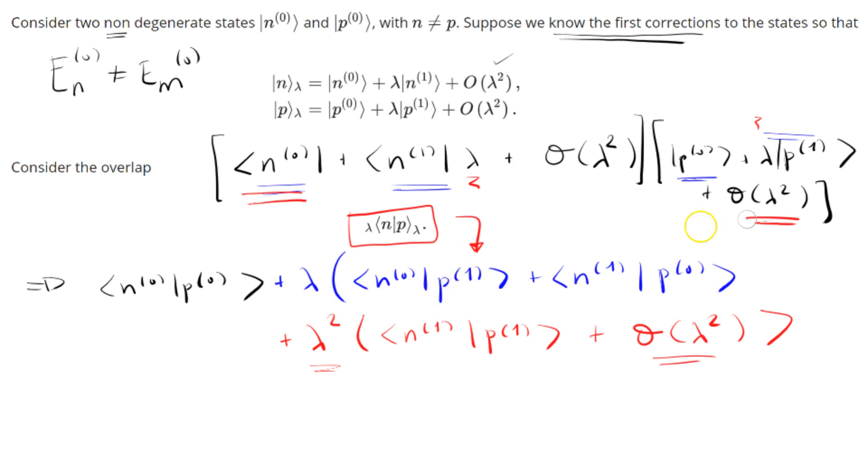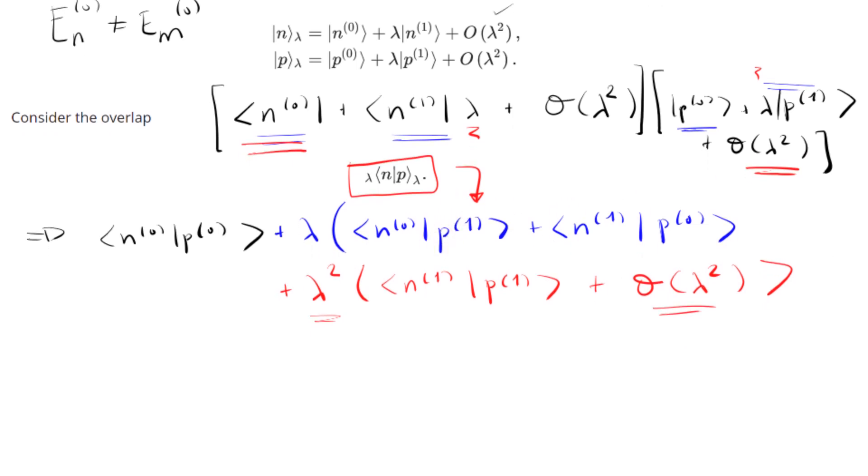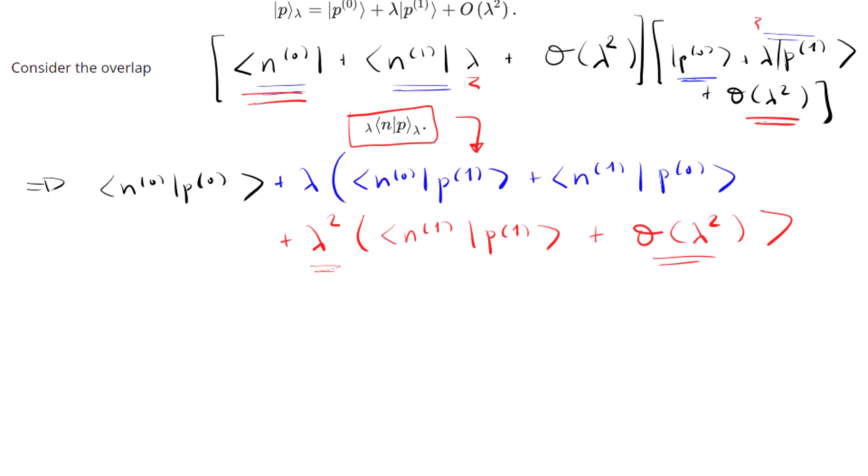But regardless, let's try to calculate this. So, let's see. We get a new color here. So anyways, we know, let's look at this guy first. N0, P0. You guys should know what this is by now. This is nothing more, this is zero, right? Because the initial eigenstates, the unperturbed eigenstates, are orthogonal to each other. So this guy is zero.